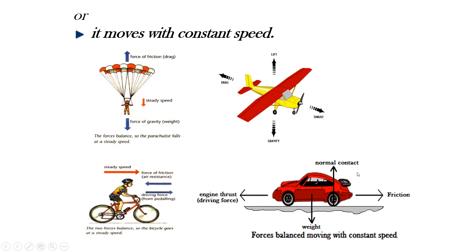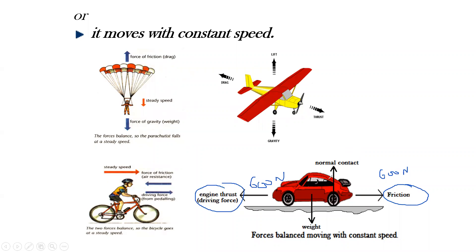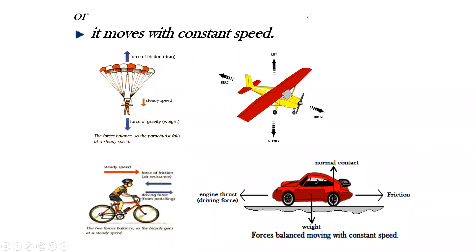To maintain a constant speed in a car, when we press the accelerator there is a force from the engine called thrust. If the thrust from the engine is 600 newtons and the air resistance (friction) is also 600 newtons, this moving car will continue to move with a constant speed — for example, maintaining 120 kilometers per hour. So for moving objects, the object continues to move when forces are balanced, and for stationary objects, it remains at rest when forces are balanced.